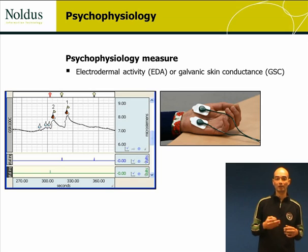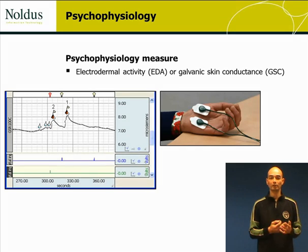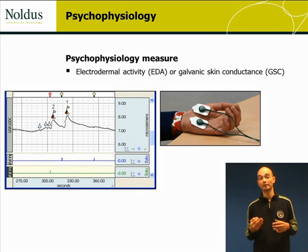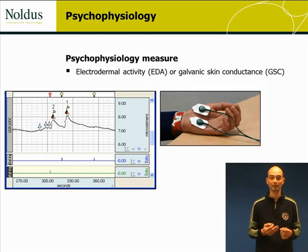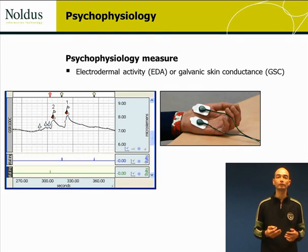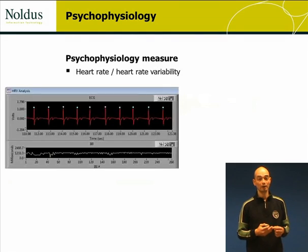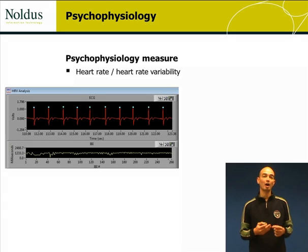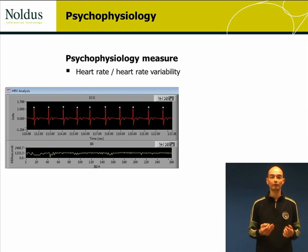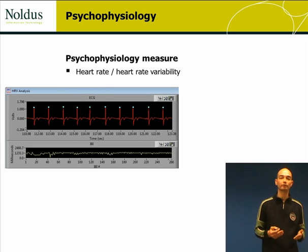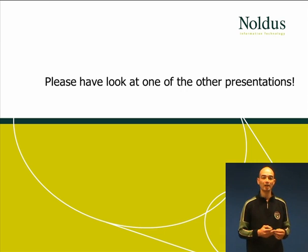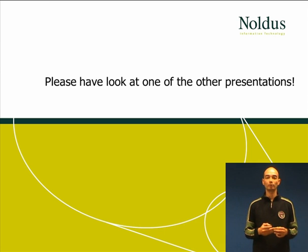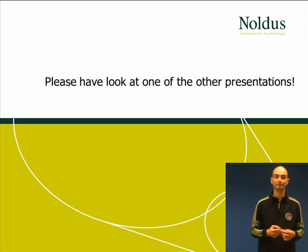An example of a physiological measure is skin conductance or electrodermal activity as a measure of general arousal. Another example is heart rate or heart rate variability as a measure of mental workload or stress. Please have a look at one of the other presentations. Thank you.